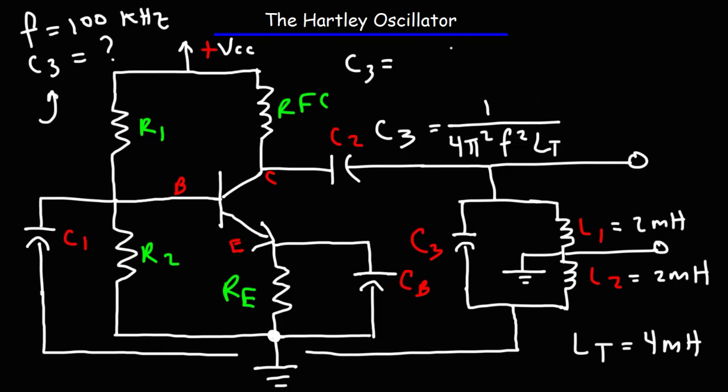Now let's plug in the numbers. So we have 1 over 4π². The frequency is 100 kilohertz. So that's 100 times 10 to the 3, or 100,000 Hertz. Don't forget to square it. And then we have 4 millihenries. That's 4 times 10 to the minus 3.